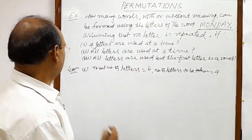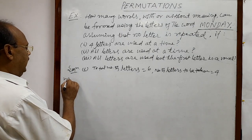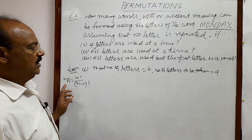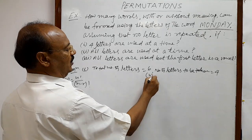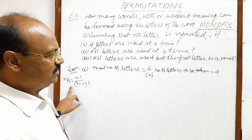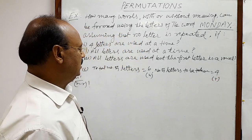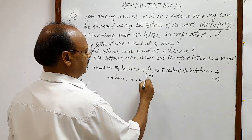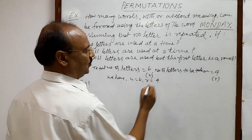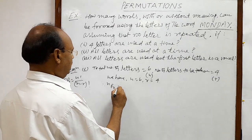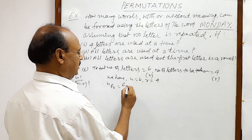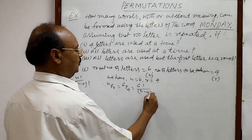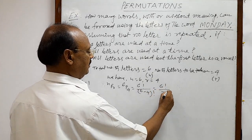For solving this problem, we will use the formula discussed in previous videos: nPr = n factorial divided by (n minus r) factorial. Here n is the total number of objects, which is six, and r is the number of objects taken at a time, which is four.